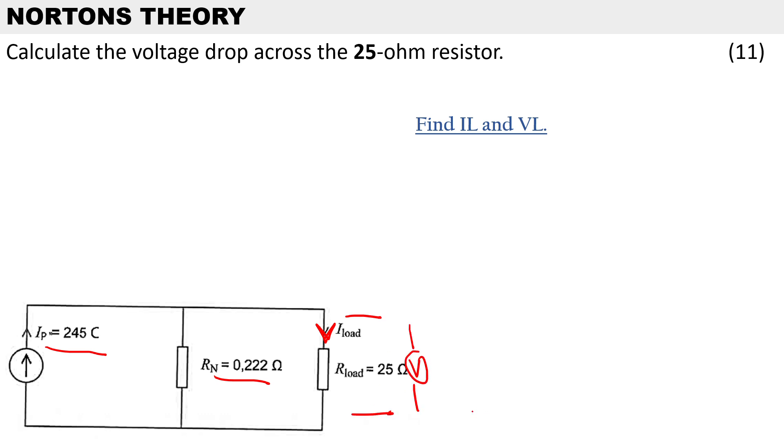To calculate IL we use the current divider rule. You can have a look on your formula sheet - this formula is provided to you. It is RN over RN plus RL multiplied by IN. We've got all those values so we substitute: Norton's resistance is 0.222 over 0.222 plus the load resistor of 25, times Norton's current which was 245 amps.